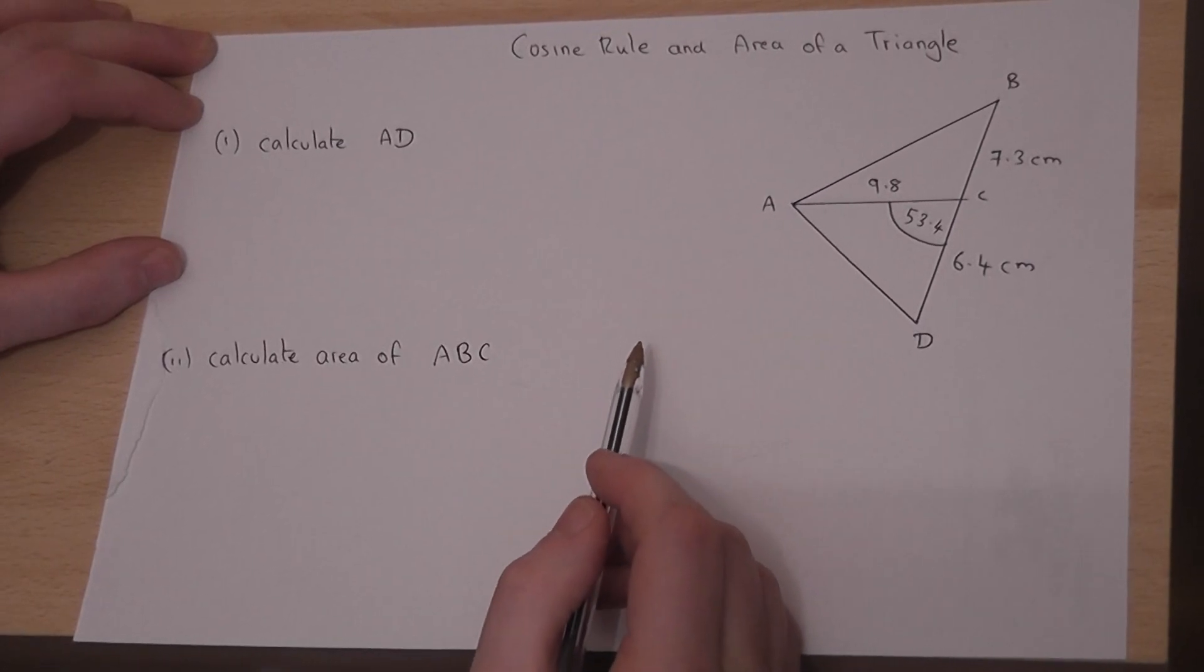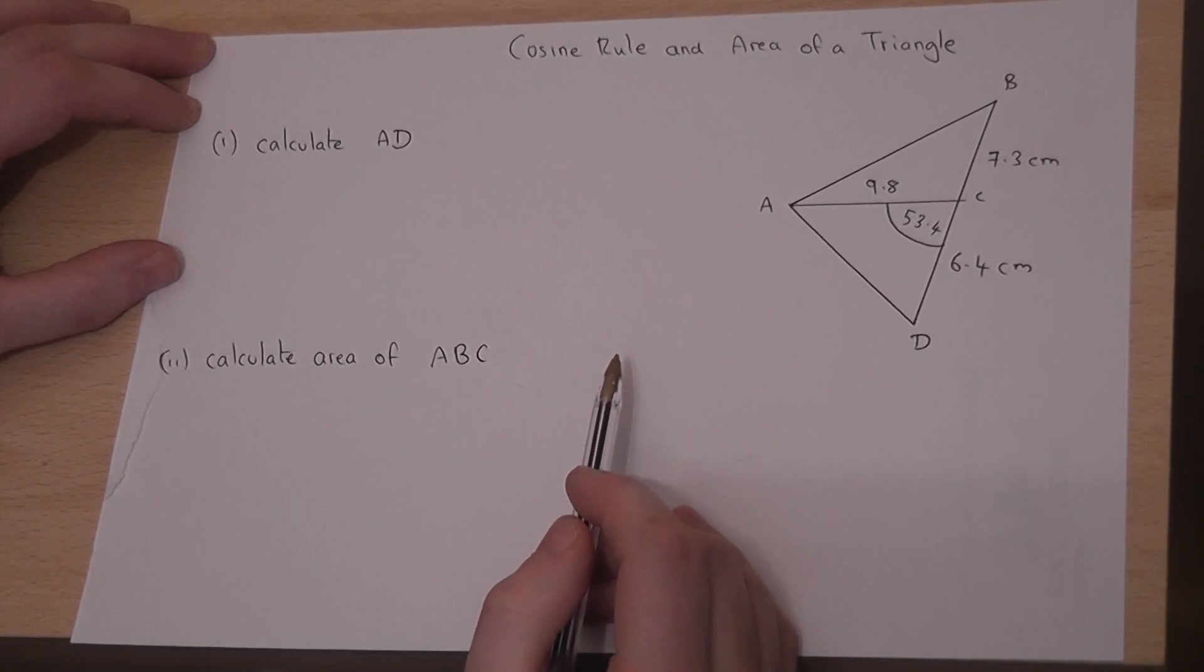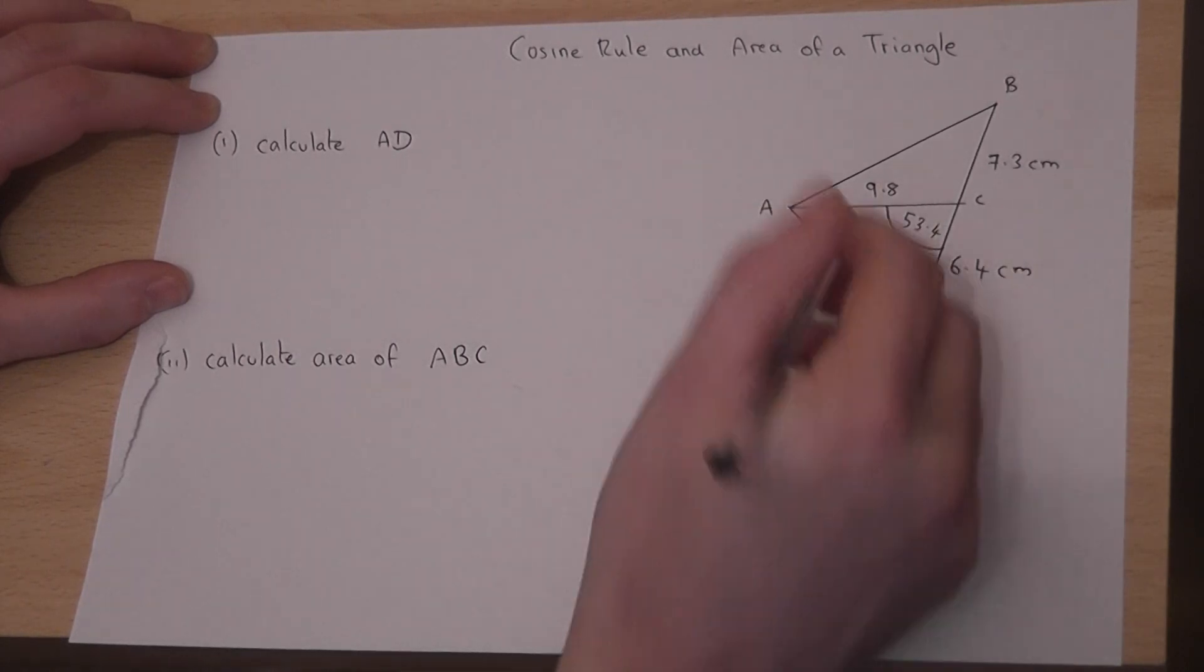This video looks at a fairly routine example of the cosine rule and also how to find the area of a triangle. In part one we're asked to find AD, so this is the length within this triangle here. Let's call that x.